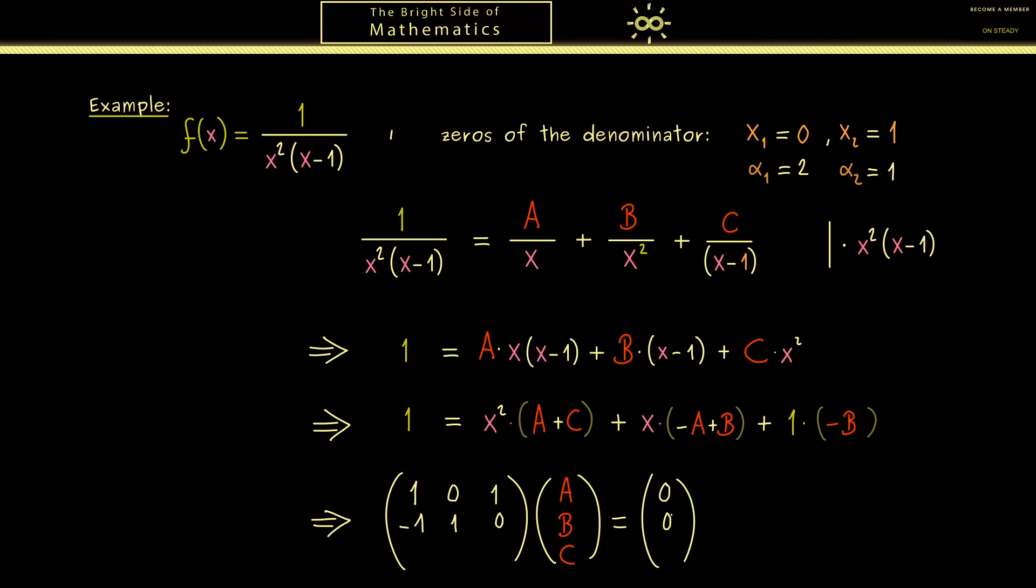And finally the last equation is minus B equals 1, so 0 minus 1, 0 equals 1.